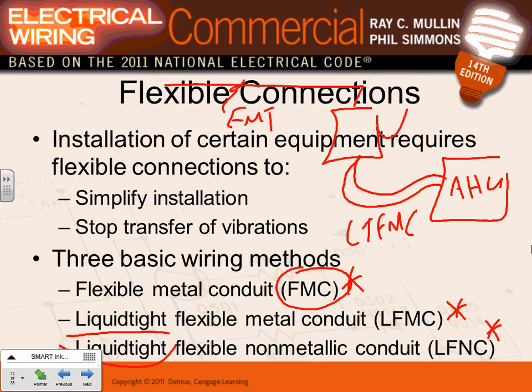Very important: when using flexible metallic conduit to tie to equipment, you have to pull an equipment ground conductor inside the flex. The flexible metallic conduit itself is not qualified as an equipment ground conductor. There's an exception for lighting fixtures - six feet or less at 20A - but for mechanical equipment, always pull an equipment ground conductor.